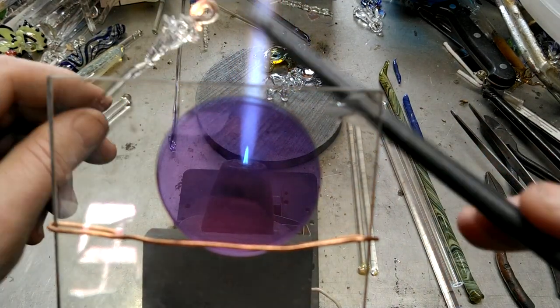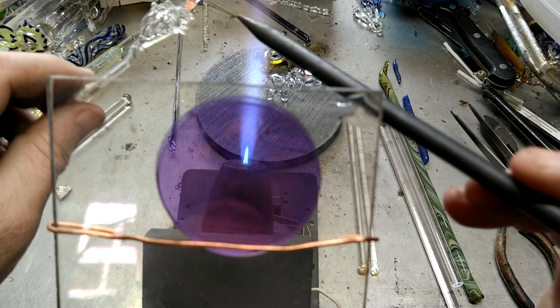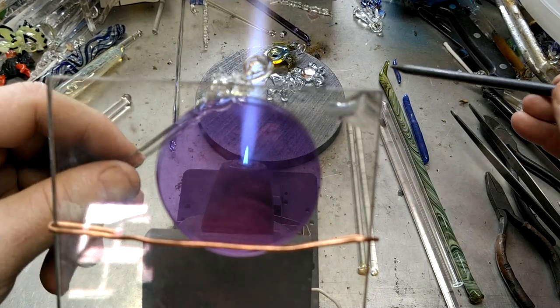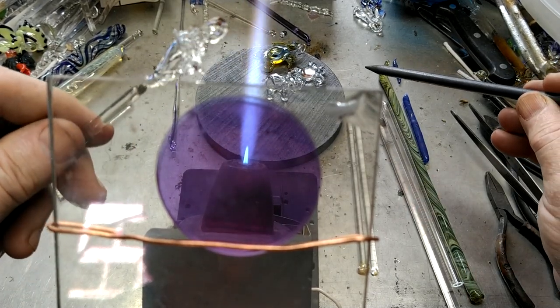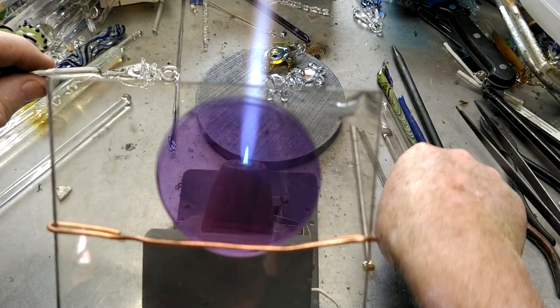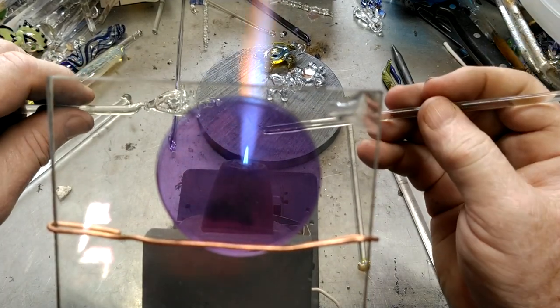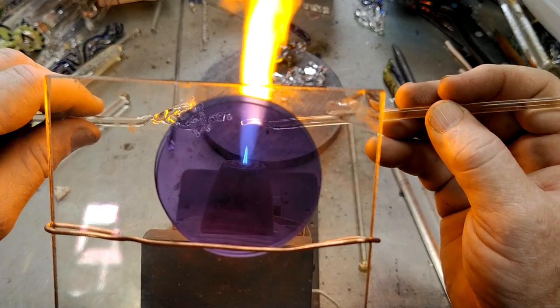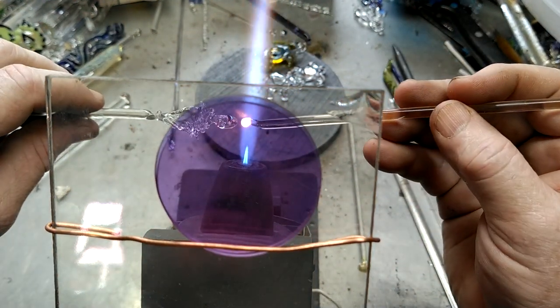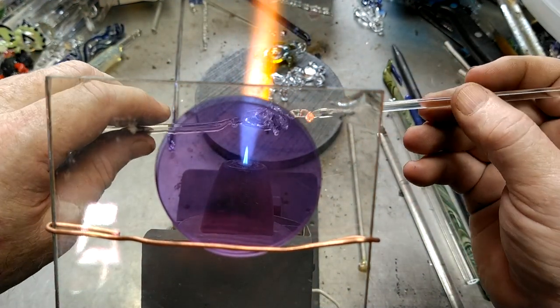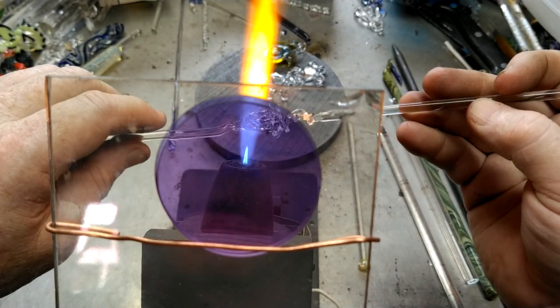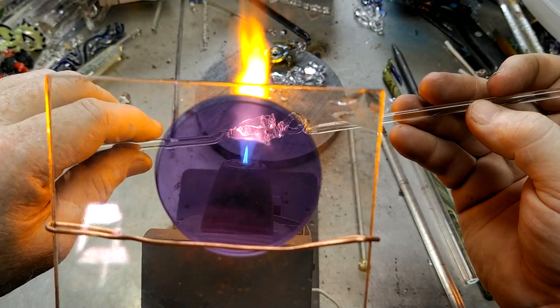Never hurts to have a graphite rod to, like so. Now the bottom half, and then after that I'm going to add some silver fume to this piece to give it a nice gold shine.